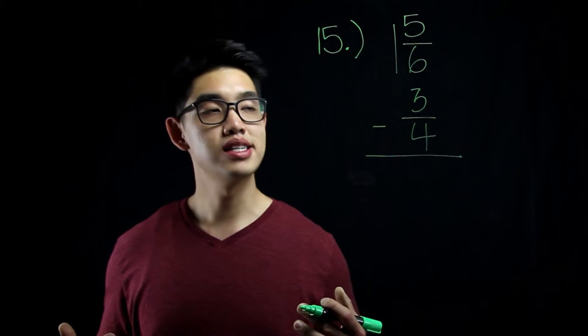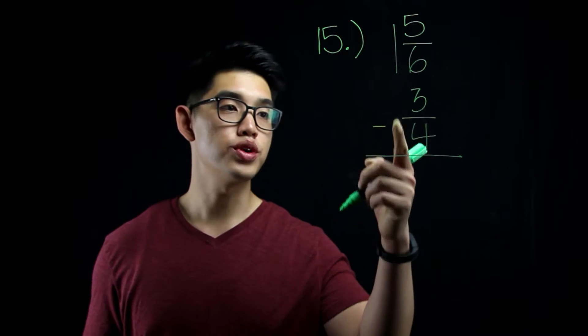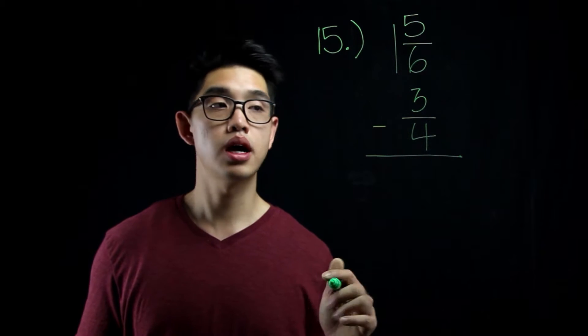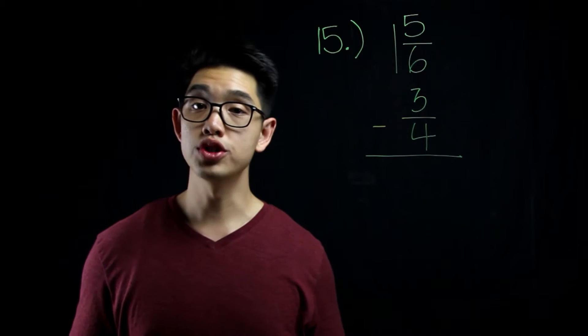Number 15 is a subtraction problem. I have 1 and 5 sixths minus 3 fourths. Before I subtract these two fractions, I'm going to find the least common denominator of 6 and 4, which is 12.